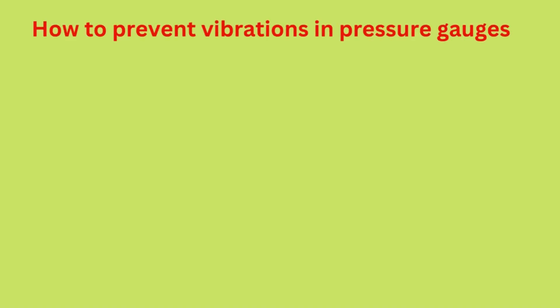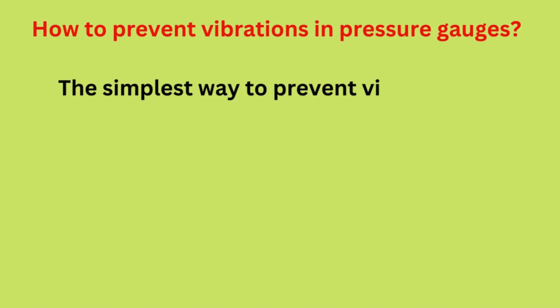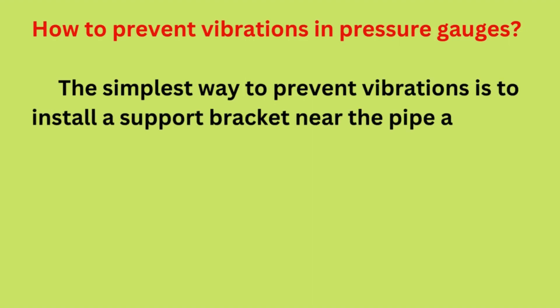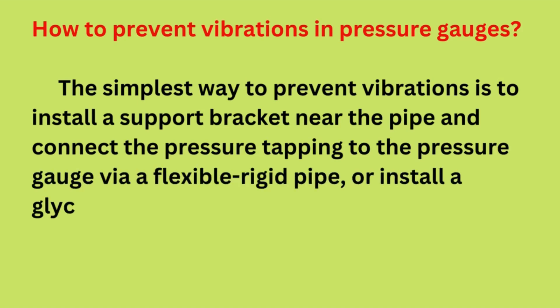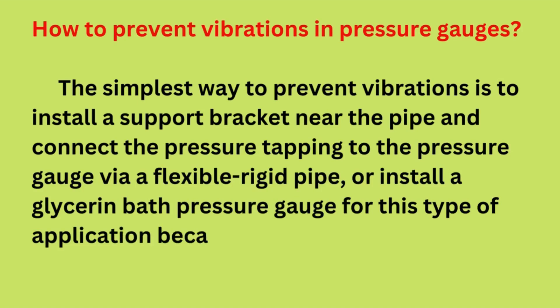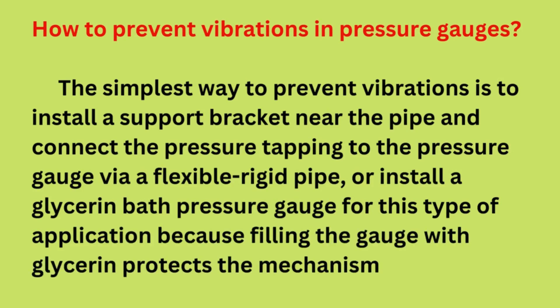How do you prevent vibrations in pressure gauges? The simplest way to prevent vibrations is to install a support bracket near the pipe and connect the pressure tapping to the pressure gauge via a flexible rigid pipe. Alternatively, install a glycerin-filled pressure gauge, because filling the gauge with glycerin protects the mechanism.